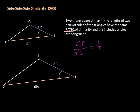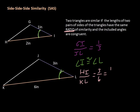You'll see that angle I and angle L are congruent by the arc marks, so angle I is congruent to angle L. Then the length of HI to KL is three to six, which equals one third. Our sides have the same ratio, and we have the included angle — the included angle is required for this property.